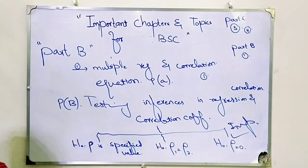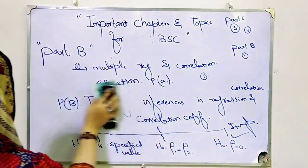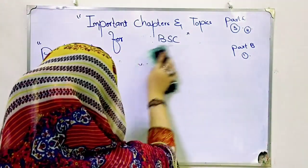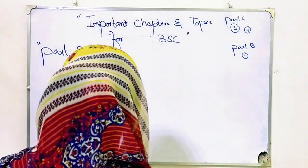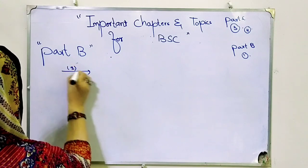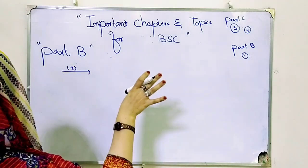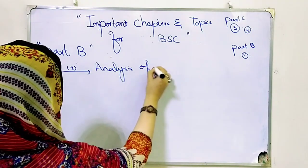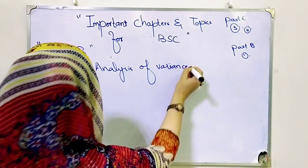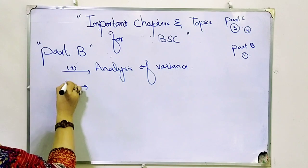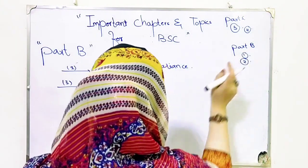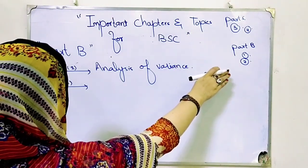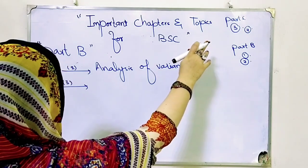Then I will tell you two extra chapters for Part B. First: Analysis of Variance — ANOVA. It is an easy chapter, just a little lengthy, but the method is not difficult. You have to prepare ANOVA — one question comes from it, meaning two questions total for Part B.